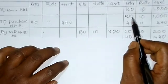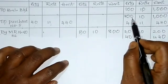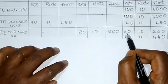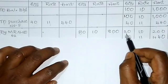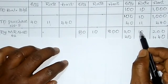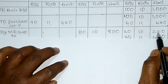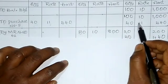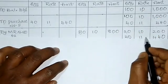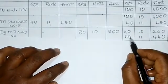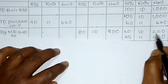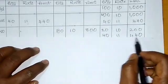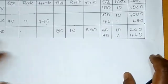After issuing 80 units from the January 1st stock of 100 units, balance is 20 units. Show this 20-unit balance in the balance column: 20 units × Rs.10 = Rs.200. Also carry forward the January 15th balance of 40 units × Rs.11 = Rs.440 as it is into the balance column.